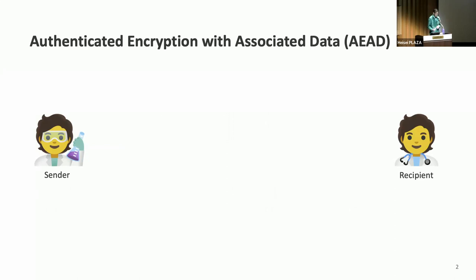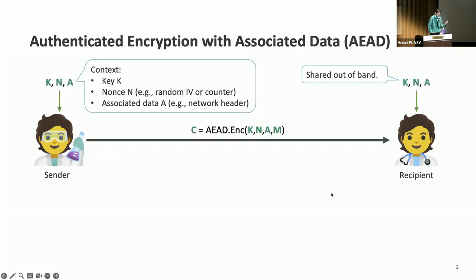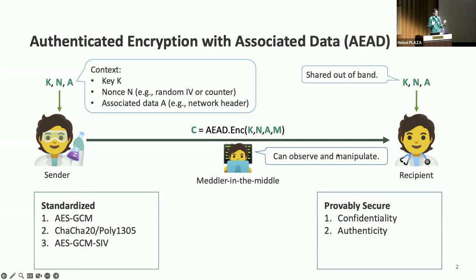AEAD enables a sender and a recipient with a shared context to exchange messages over an insecure channel. The context consists of a key, a nonce like a random IV or counter, and associated data like a packet header. The key must be shared out of band; the nonce and associated data can be shared in band with the ciphertext or out of band. This allows sending encrypted messages with confidentiality and authenticity. We have many schemes achieving these goals, including AES-GCM, ChaCha20-Poly1305, and AES-GCM-SIV. These schemes are standardized and widely deployed — if you're using encryption right now, chances are you're using one of them. They have security proofs showing they achieve confidentiality and authenticity even against a meddler in the middle.